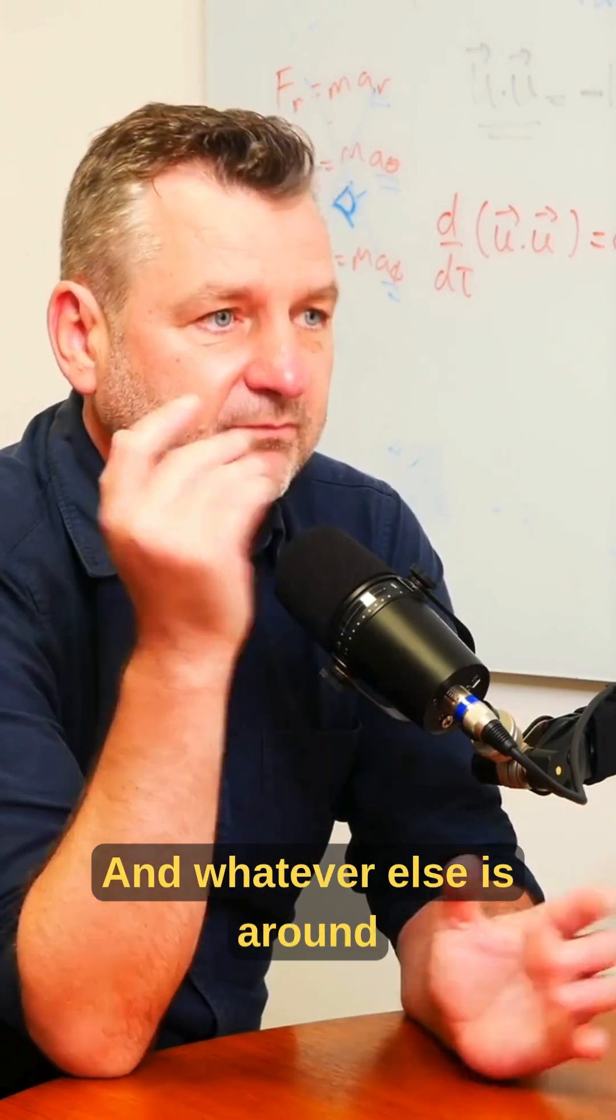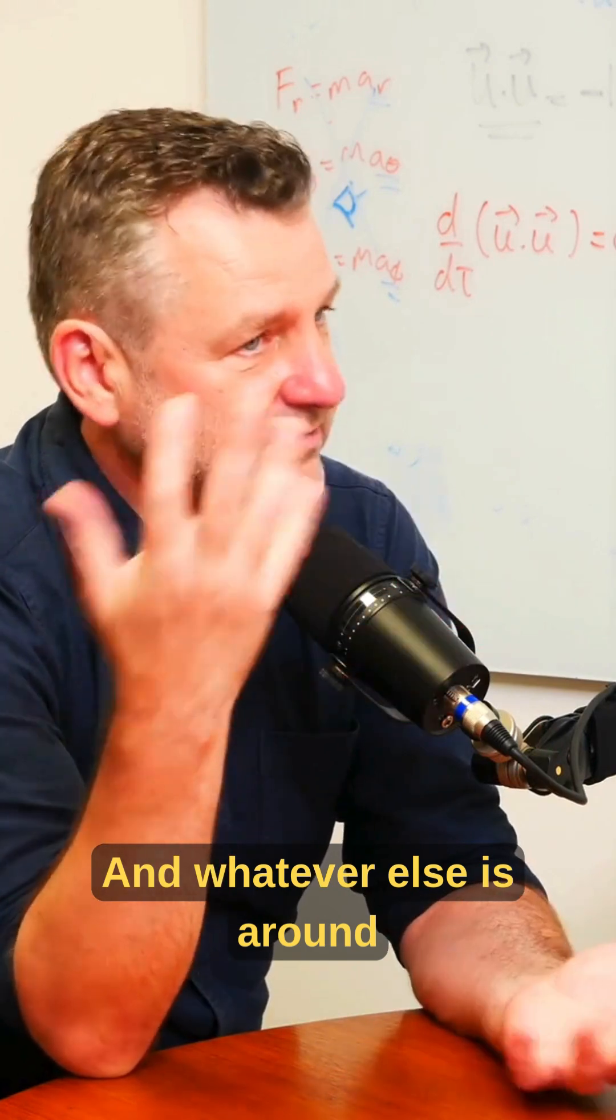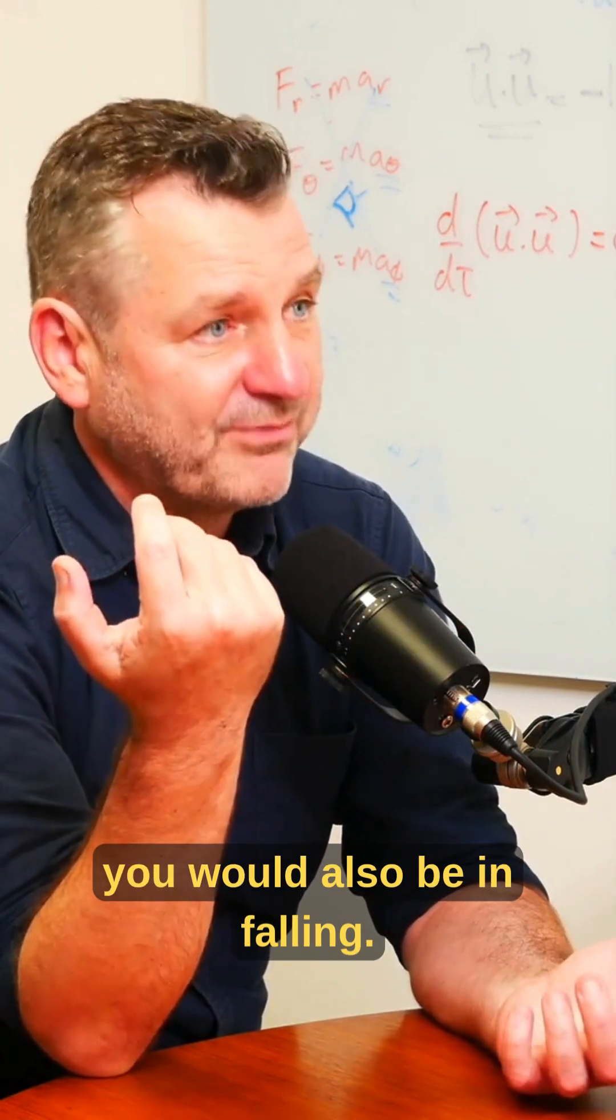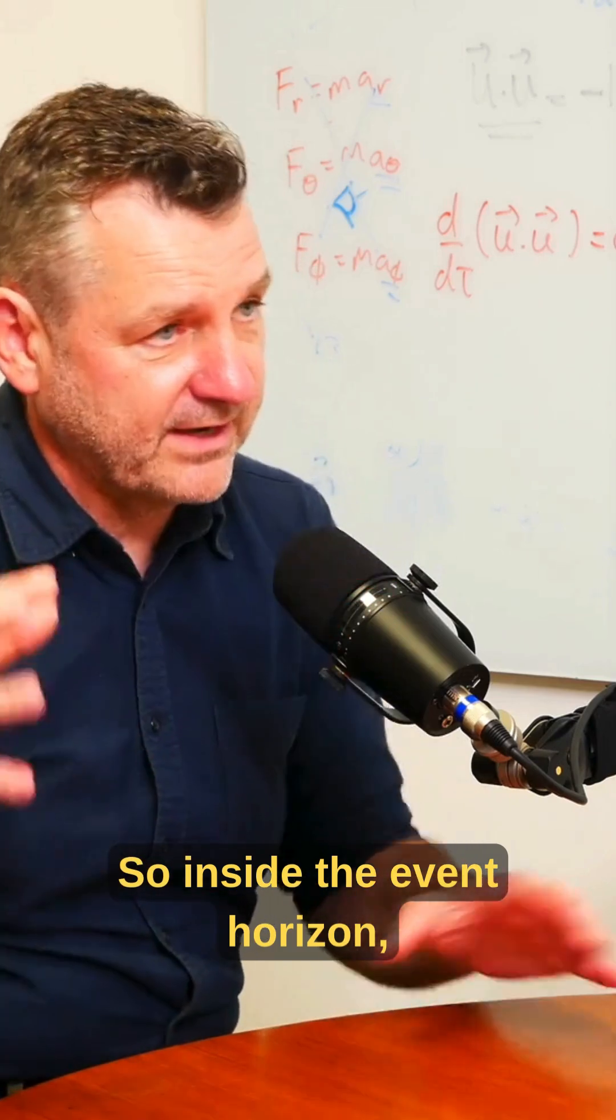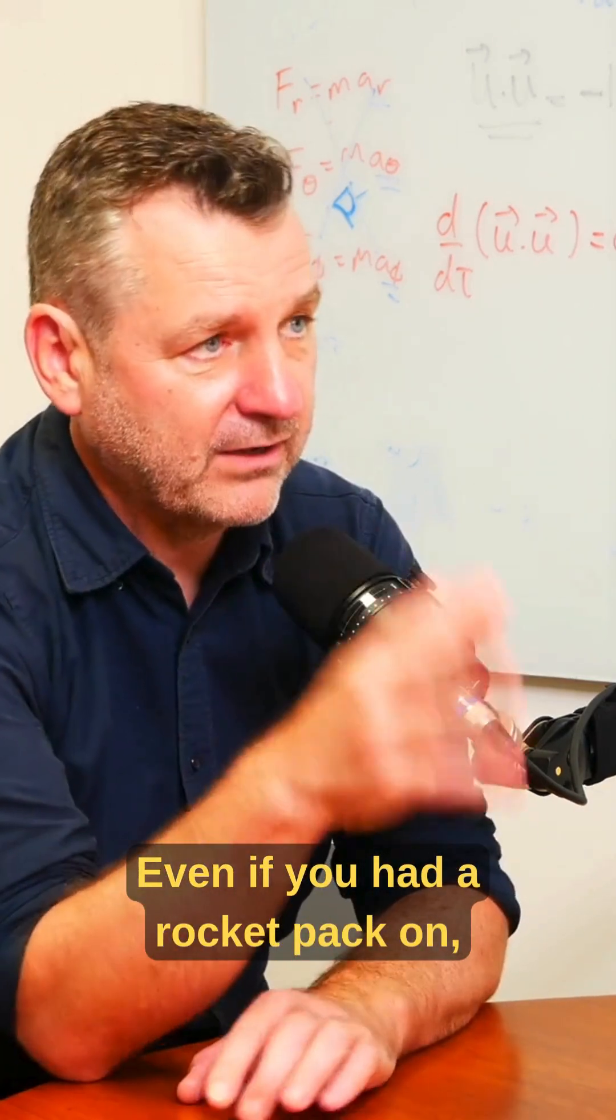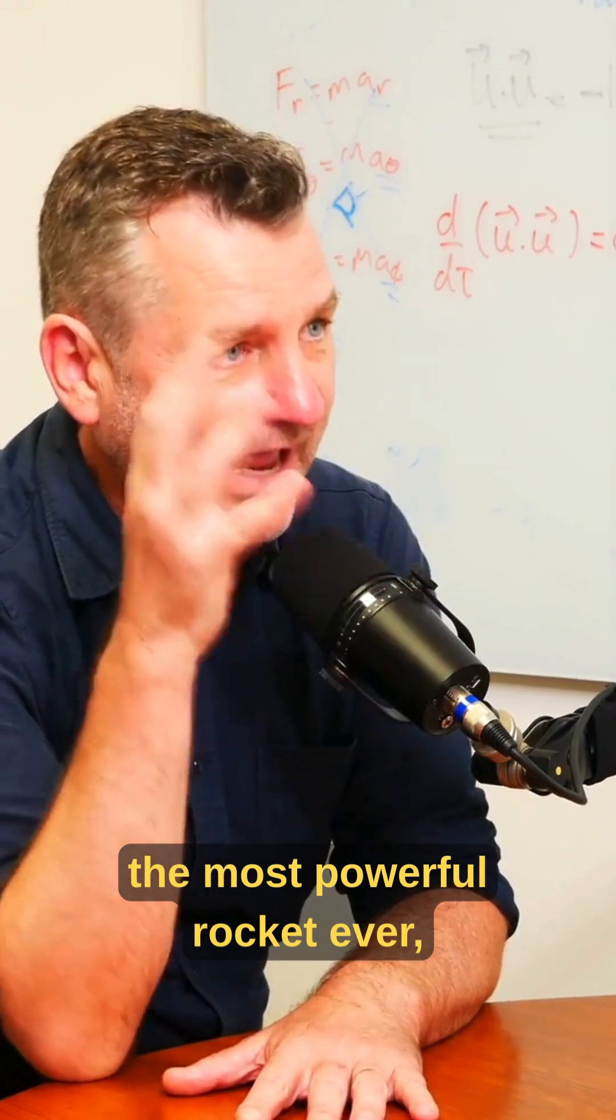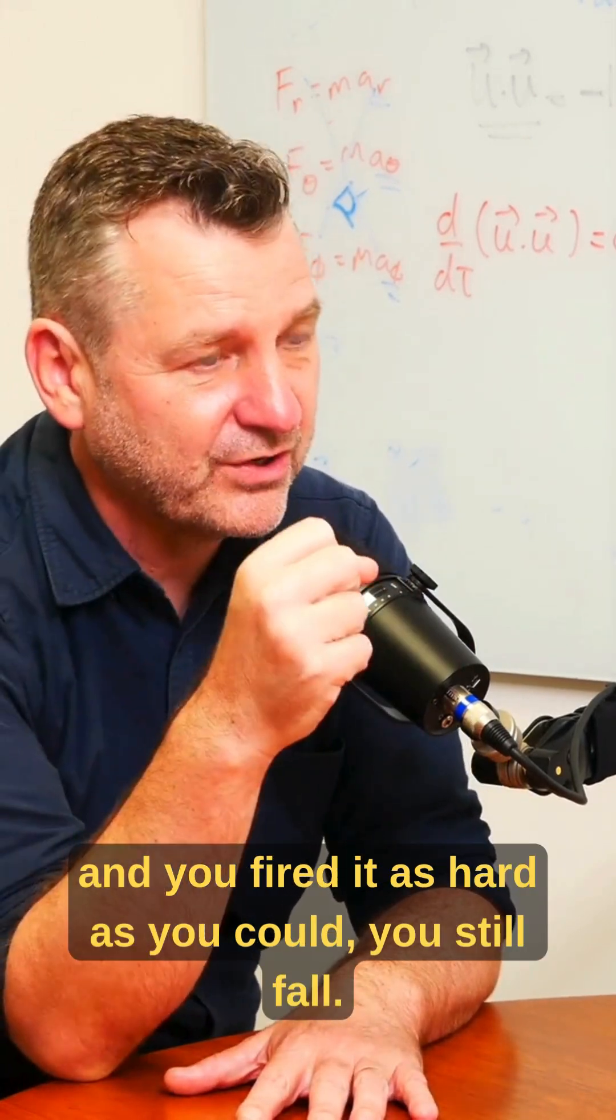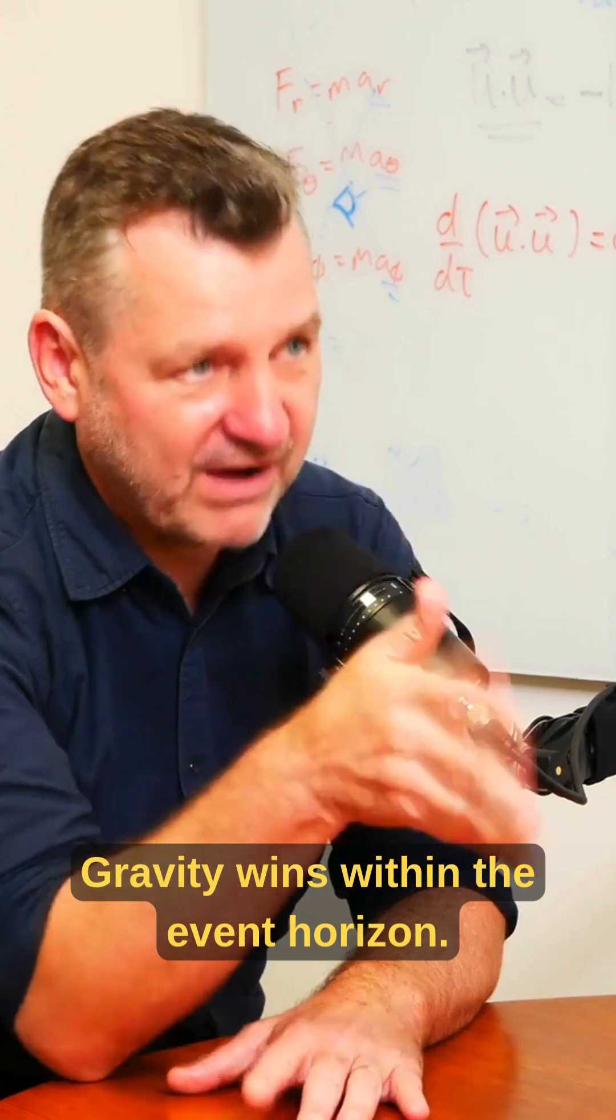You would fall towards that, and whatever else is around you would also be infalling. Inside the event horizon, everything has to fall. Even if you had a rocket pack on, the most powerful rocket ever, and you fired it as hard as you could, you still fall. Gravity wins within the event horizon.